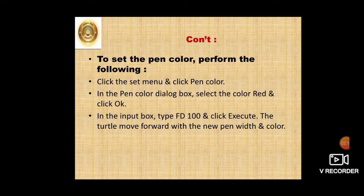Next, to set the pen color, click the Set menu and click Pen Color. In the Pen Color dialog box, select the color red and click OK. You can select any color. Then in the input box, type FD100, that is forward 100, and click Execute. The turtle moves forward with the pen width and color applied.